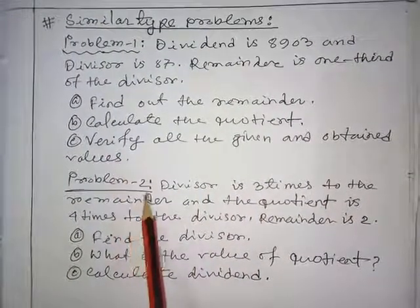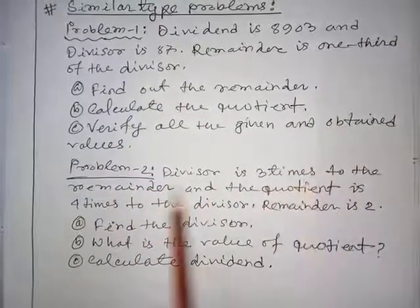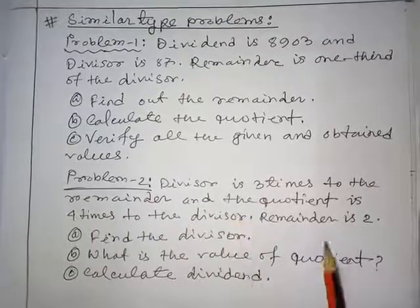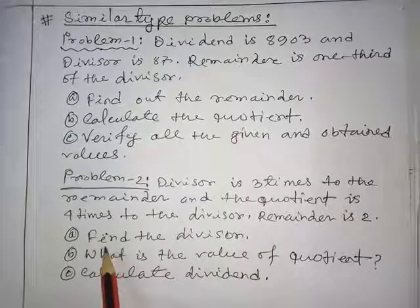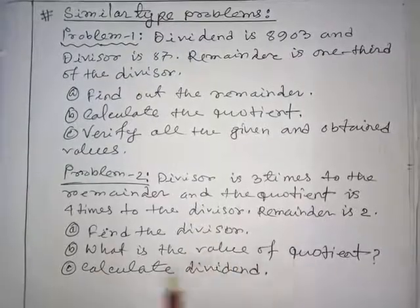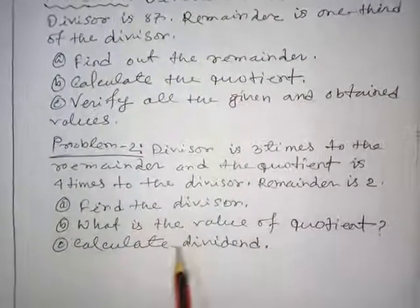Problem 2: Divisor is 3 times the remainder and the quotient is 4 times the divisor. Remainder is 2. Question A: Find the divisor. Question B: What is the value of the quotient? And C: Calculate the dividend.